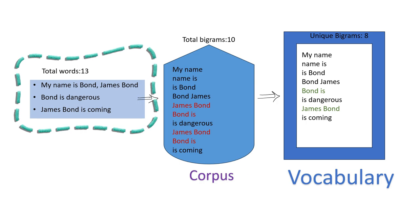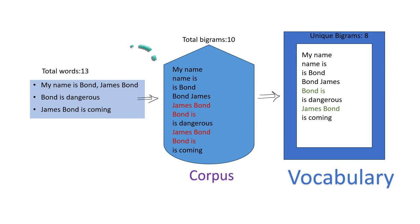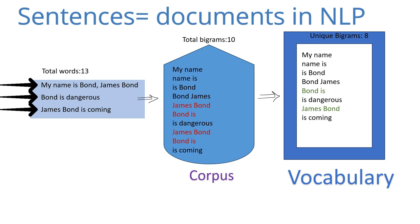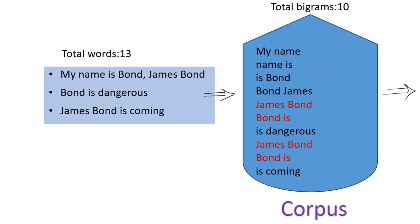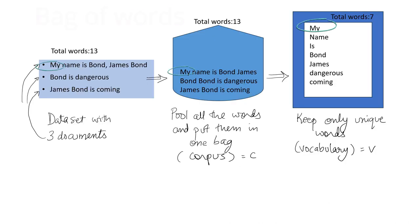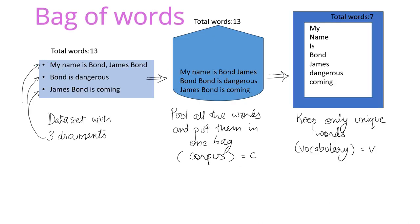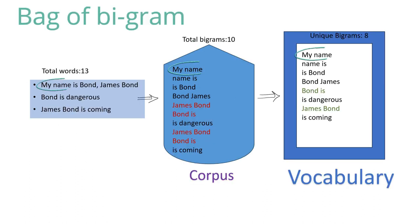We have our dataset with 13 words in total and 3 sentences or documents. When creating the corpus, we take a set of 2 words at a time and they should be adjacent to each other. In the bag of words technique, each word behaved as one unit, but in bag of bigrams, the 2 adjacent words behave as one unit.